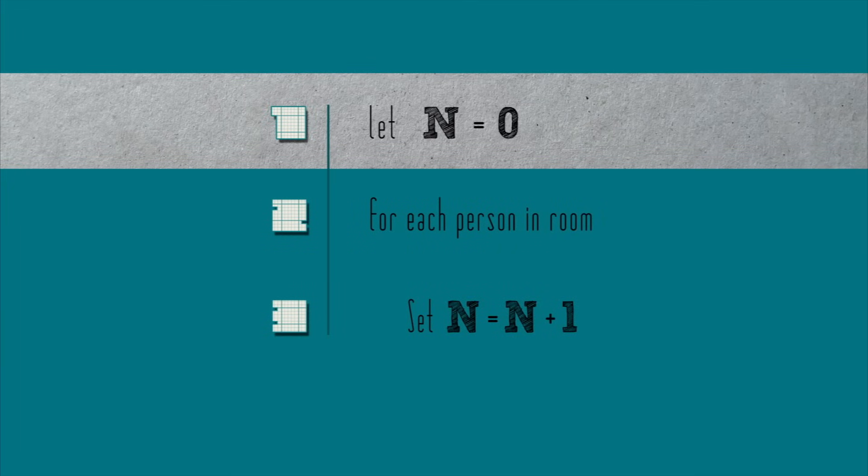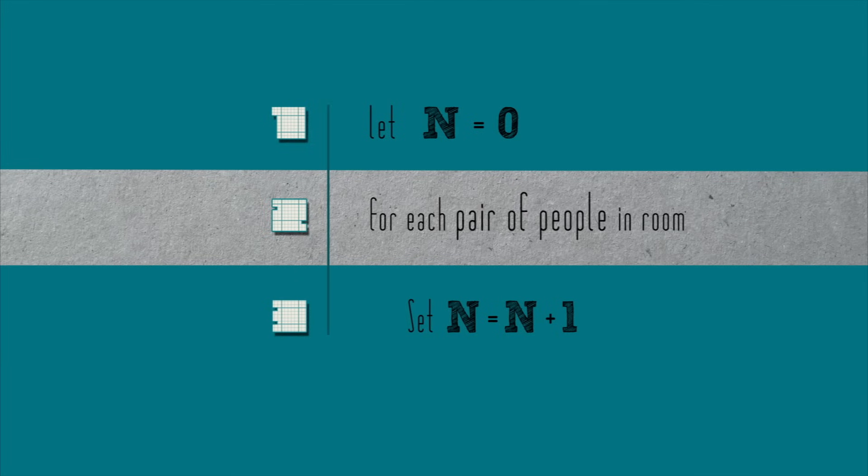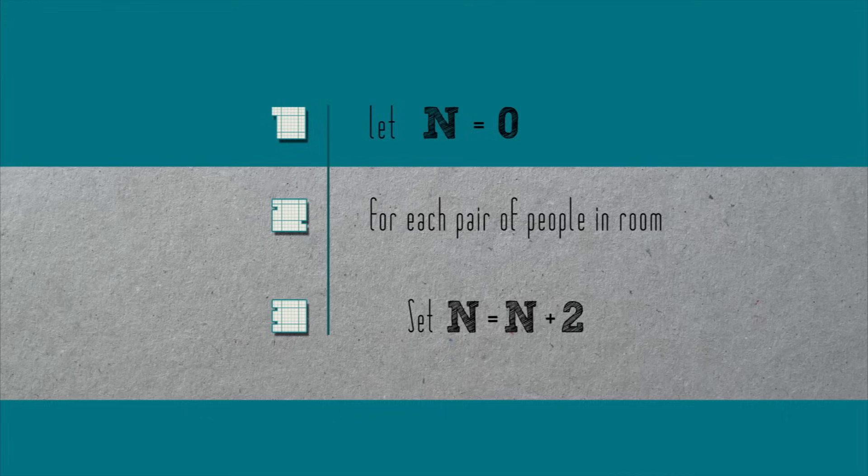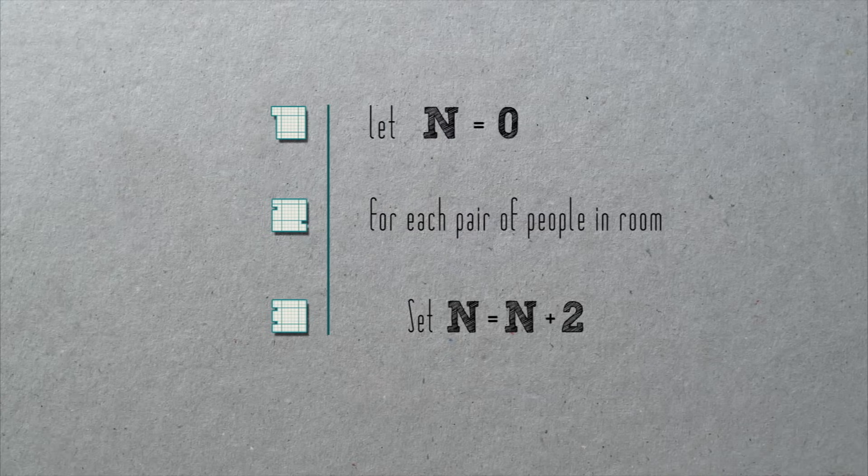Let n equal zero. For each pair of people in room, set n equal to n plus two. Pretty simple change, right? Rather than count people one at a time, we instead count them two at a time. This algorithm runs twice as fast as the last. But is it correct?